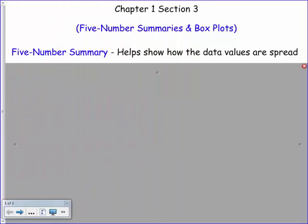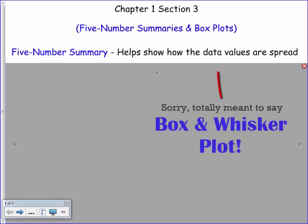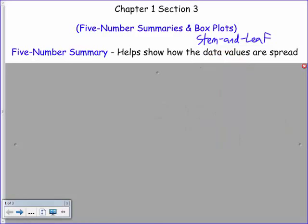So we're going to build on our median that we learned the other day. We're going to learn about the five-number summary and creating a box plot, or sometimes what they call a stem-and-leaf plot. A five-number summary helps to show how the data values are spread, and I'll explain that in just a minute when we take a look at a box plot here.